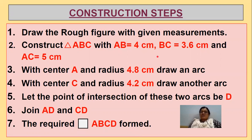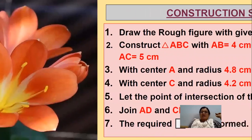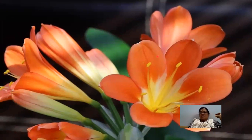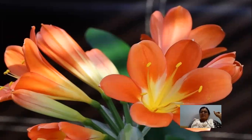This covers the construction when 4 sides and 1 diagonal are given. Today we have discussed two constructions: the first when 4 sides and 1 angle are given, and the second when 4 sides and 1 diagonal are given. I have explained the rough diagram, the construction, and the construction steps in detail.